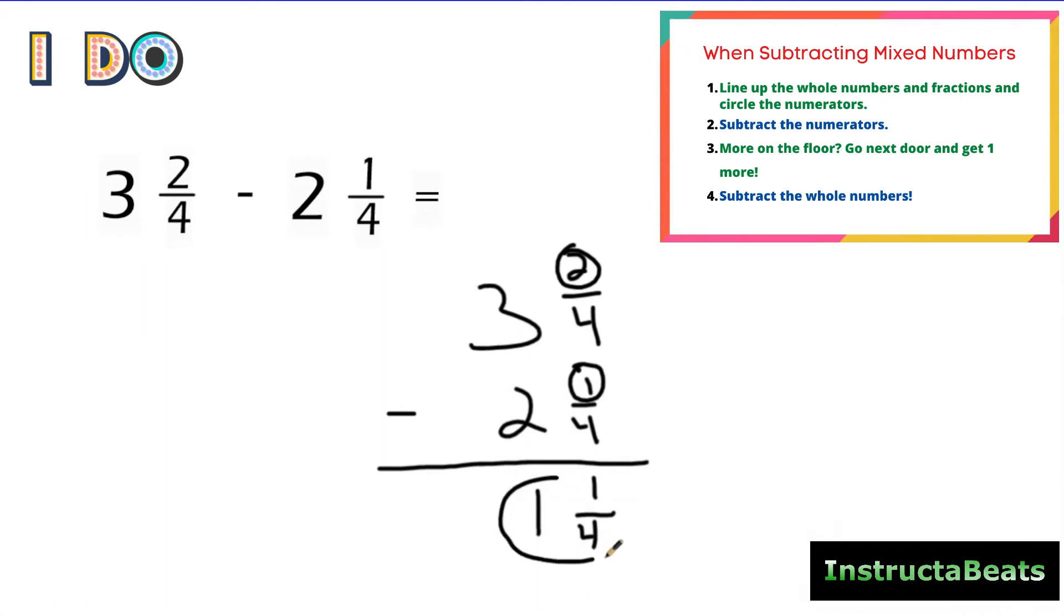So the difference, which is the answer to subtraction problem, of 3 2/4 and 2 1/4 is 1 1/4. That's our steps. That's how easy it is, that it's exactly like adding mixed numbers, except we're subtracting them instead of adding them.